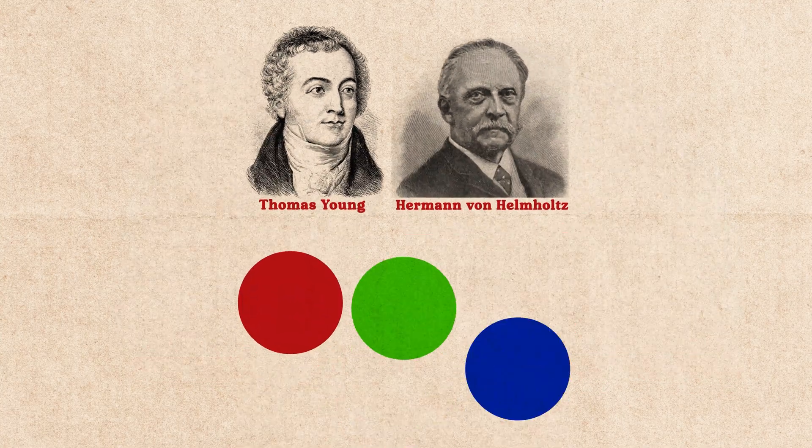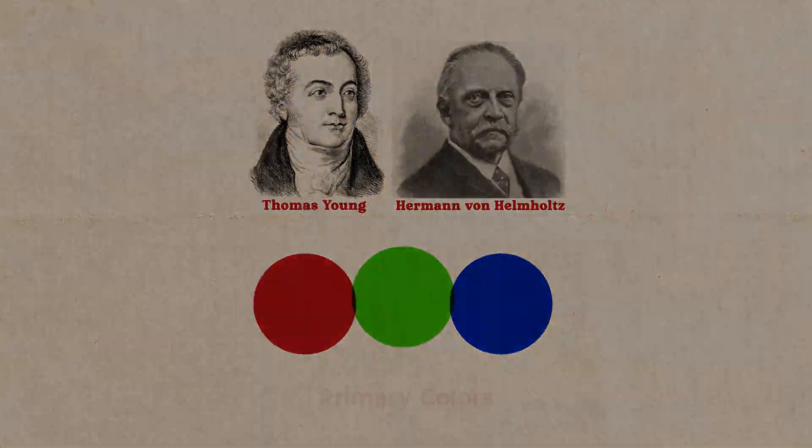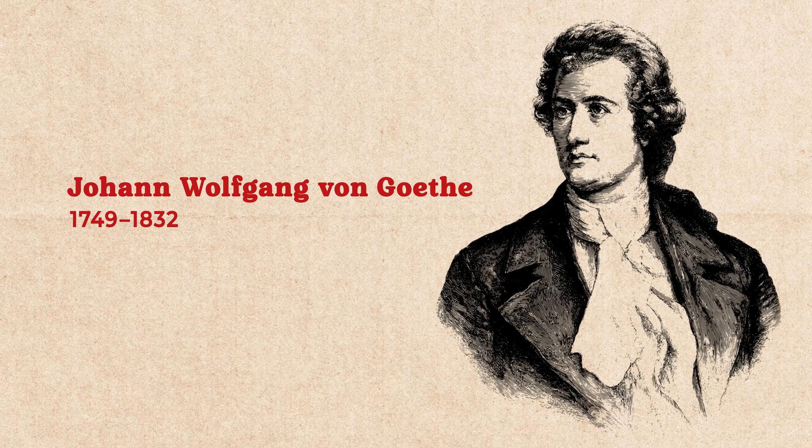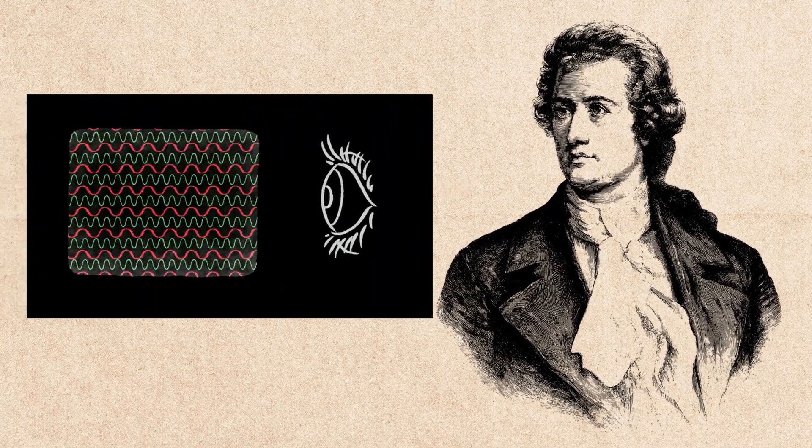Fast forward two centuries later, and two other scientists — Thomas Young and Hermann von Helmholtz — defined red, green, and blue as primary colors that combine to produce white light, which ultimately led to the RGB color model we use in digital screens today. Another two centuries later, our second important person, Johann Wolfgang von Goethe, brought color theory beyond wavelengths of light and into the realm of human perception. While Newton saw color as a scientific phenomenon, Goethe believed color was a shifting phenomenon that could change based on context, perspective, and even mood.